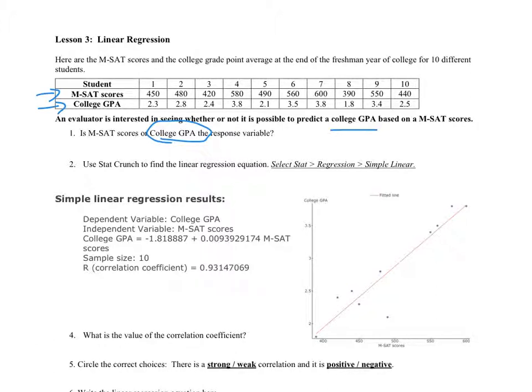Once your data is in, you want to make a scatter plot and have StatCrunch find the best fit line for you. So in StatCrunch, just select stat, and then regression, and then simple linear.